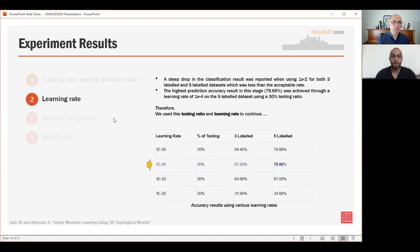In convolutional neural networks, the learning rate is the amount by which the weights of the nodes are updated during training. We tried to adjust different learning rates to test their effect on accuracy. A steep drop in the classification result was reported when using 1 × 10^-2 for both 3 and 5-label datasets, which was less than the acceptable rate. However, the highest prediction accuracy at this stage, 79.66%, was achieved through the learning rate 1 × 10^-4 on the 5-label dataset using 30% testing ratio. So there is a 1% increase from the last stage. Therefore, we are using this setting to continue in our sensitivity analysis.